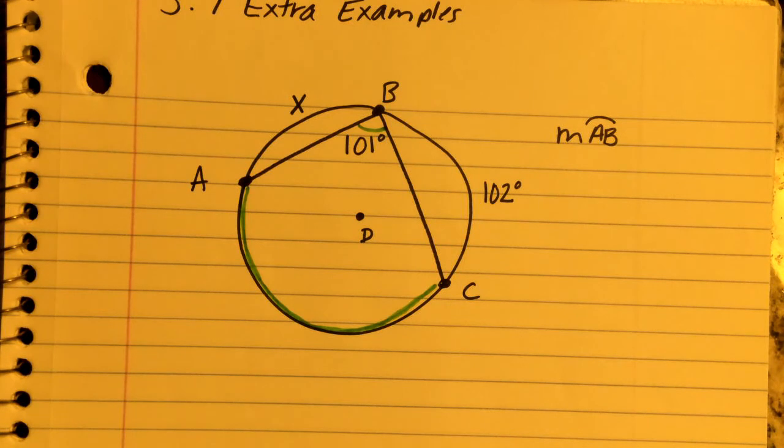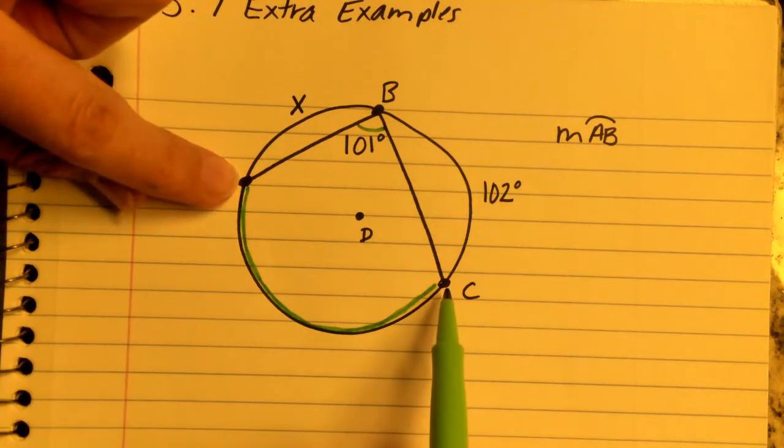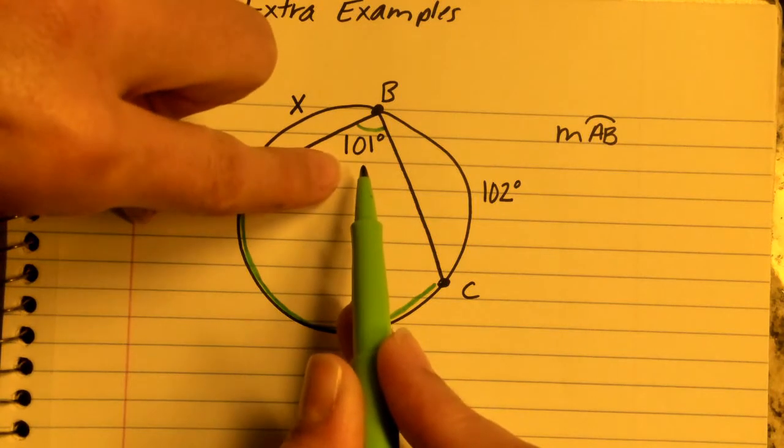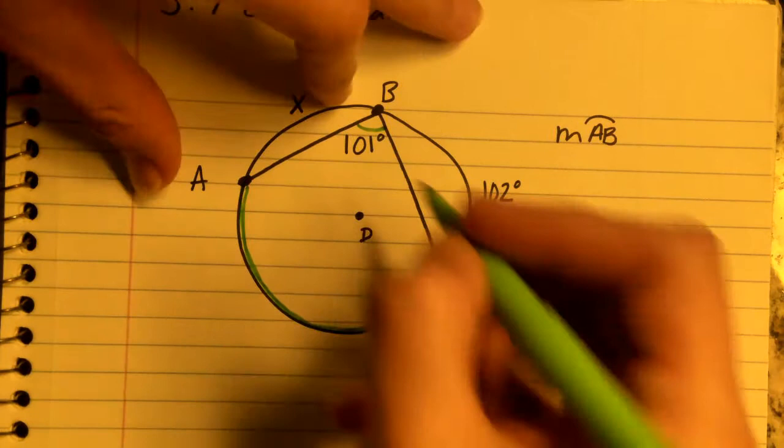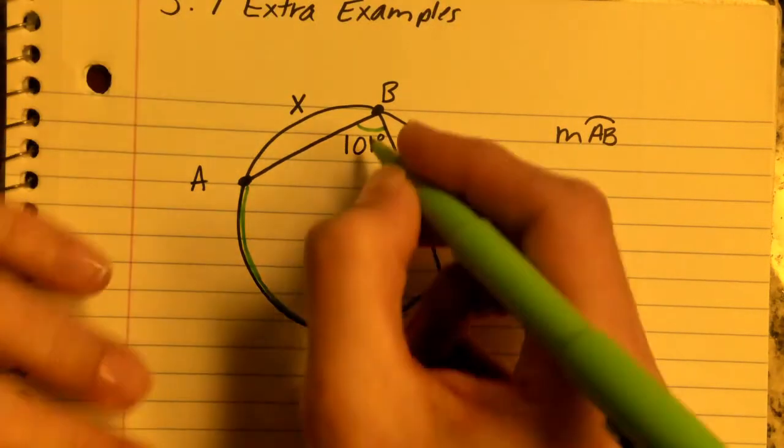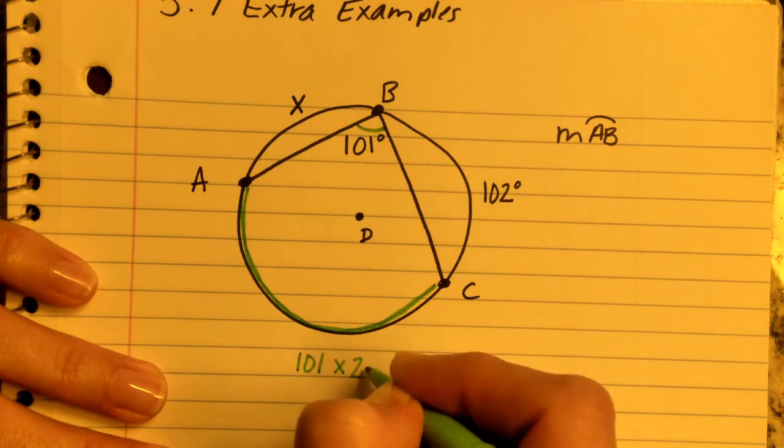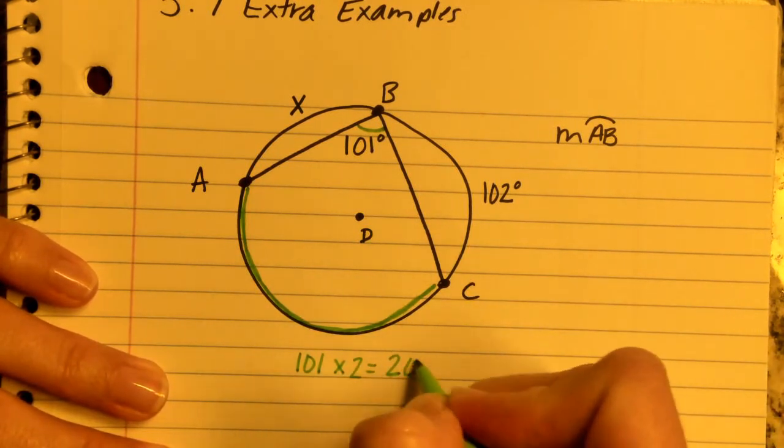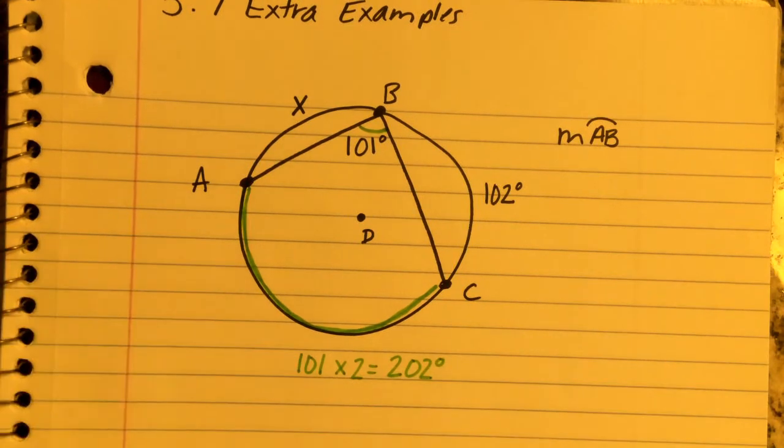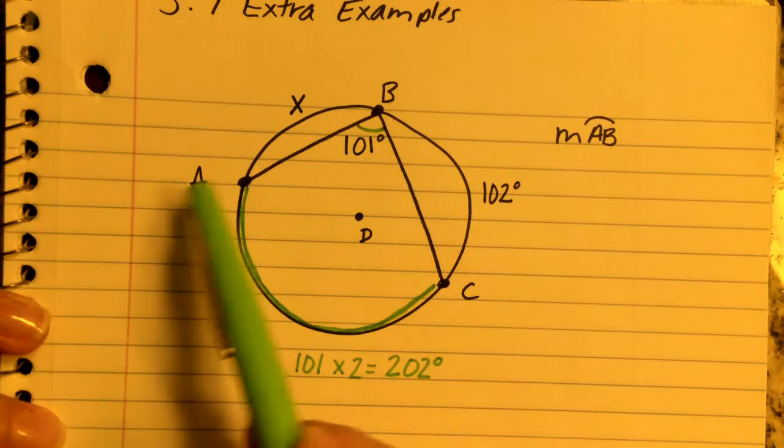This follows a formula where the arc is half the length of the inscribed angle. But I don't have the arc, I have the angle, so we need to go the other direction. To find this, we take the inscribed angle and multiply it by 2 to get the length of this arc, which gives us 202 degrees.